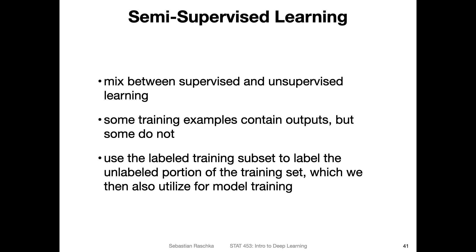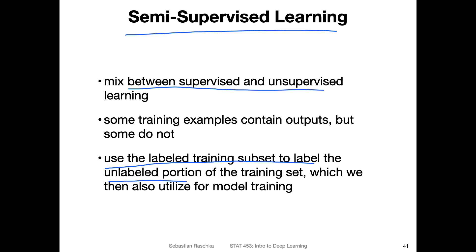One is called semi-supervised learning, which is kind of like a mix between supervised and unsupervised learning. In that scenario, we have some labels for some training examples, but not labels for others. Semi-supervised learning is about using the labeled training subset to label the unlabeled portion of the training set, and then we can use them to make a better decision boundary.